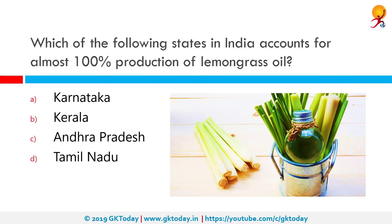Which state in India accounts for almost 100% production of lemongrass oil? The correct answer is Kerala. India grows this crop in 3,000 hectares, largely in Kerala, Karnataka, Uttar Pradesh, and Assam, with annual production ranging between 300 to 350 tons per annum.